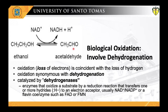Dehydrogenation, or oxidation-reduction reactions, are catalyzed by oxidoreductases or dehydrogenases. These enzymes oxidize the substrate by a reduction reaction that transfers one or more hydrides to an electron acceptor, usually NAD⁺ or NADP⁺, or a flavin coenzyme such as FAD or FMN.